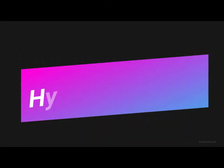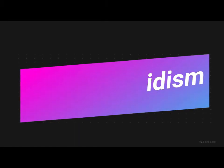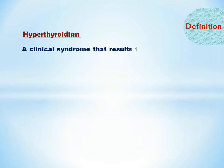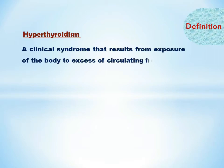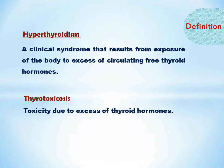Hyperthyroidism. We've already discussed thyroid gland and hypothyroidism in our previous presentation, so this would be the third part under the same topic. Hyperthyroidism or thyrotoxicosis is a clinical syndrome that results from exposure of the body tissues to excess of circulating free thyroid hormones. Thyrotoxicosis literally means toxicity due to excess of thyroid hormones. All the tissues that contain thyroid receptors are affected.